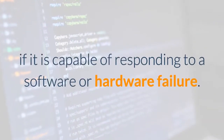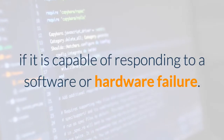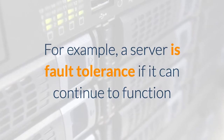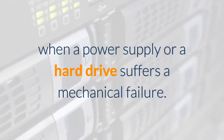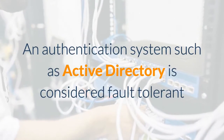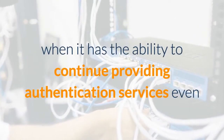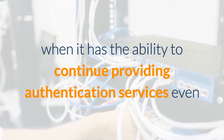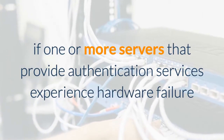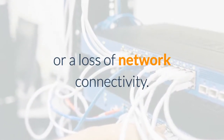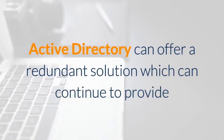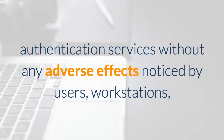A system is said to be fault tolerant if it is capable of responding to a software or hardware failure. For example, a server is fault tolerant if it can continue to function when a power supply or hard drive suffers a mechanical failure. An authentication system such as Active Directory is considered fault tolerant when it has the ability to continue providing authentication services even if one or more servers experience hardware failure or a loss of network connectivity.